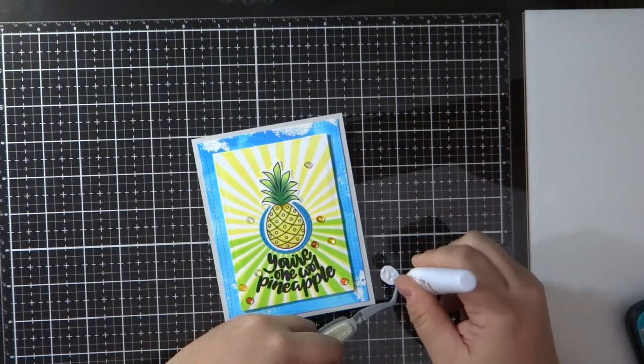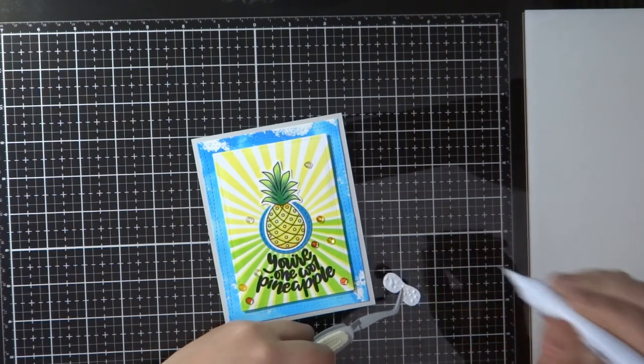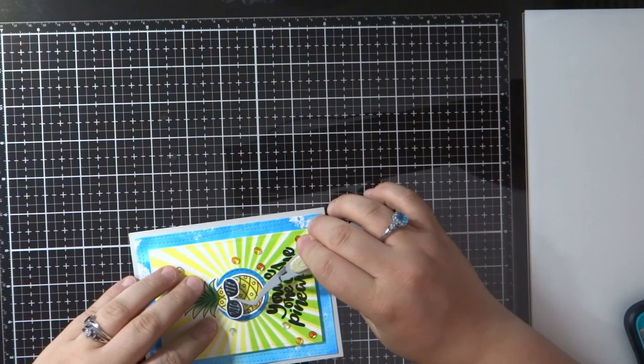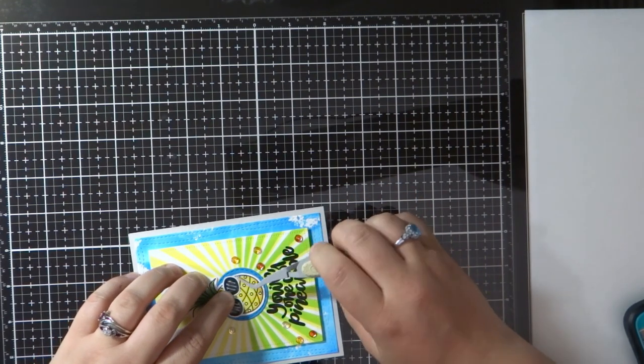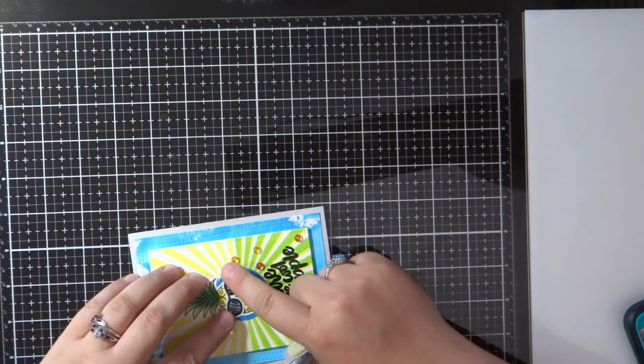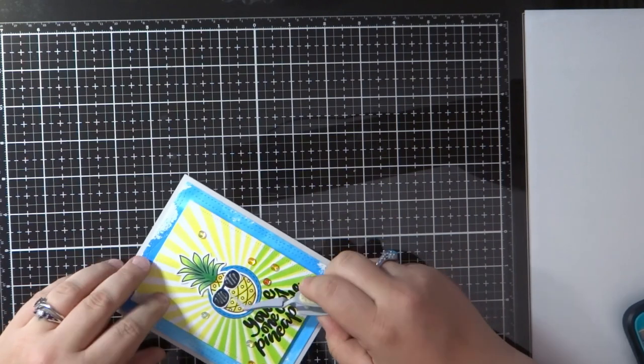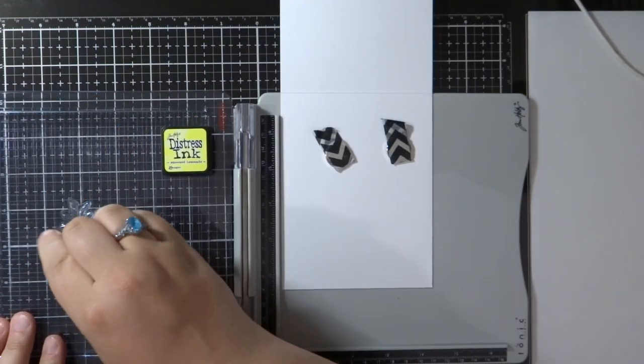And I'm going to take those sunglasses and using a Nuvo glue pen, this is a new glue pen to me. It's okay. I don't mind it. I'm going to stick those sunglasses right onto the pineapple and it just makes them look super cute because the sentiment says you're one cool pineapple. So you got to have sunglasses, right?